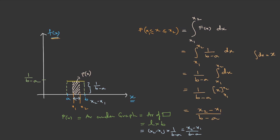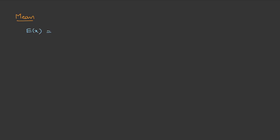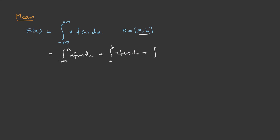Now let us calculate the mean, or expectation. The expectation of x is the integral of x·f(x) dx, where the integration runs from negative infinity to positive infinity. The random variable domain is only from a to b, so we split the integral into three parts: negative infinity to a, a to b, and b to positive infinity. The first and third parts are 0, so we only need to find the middle part.